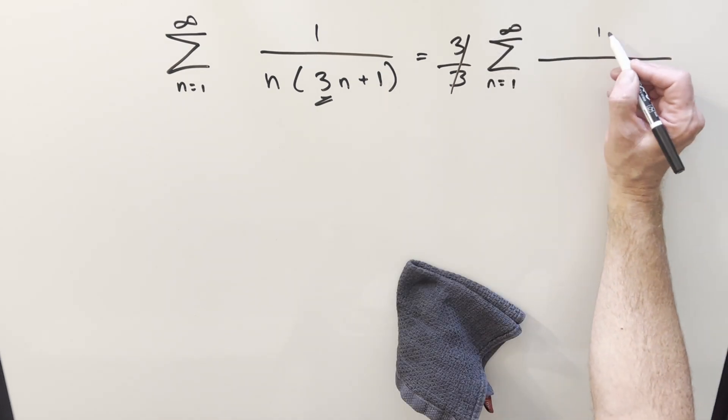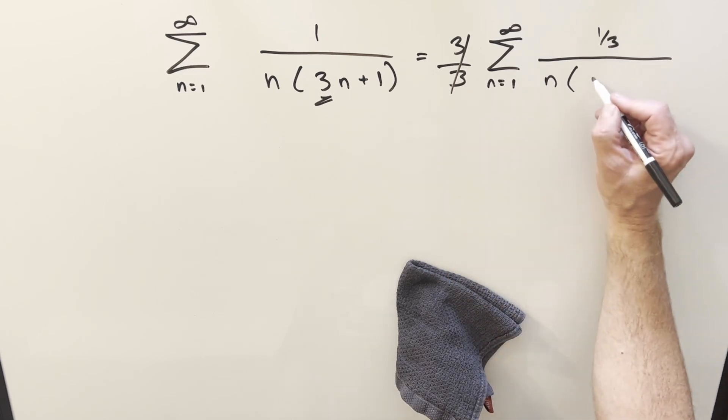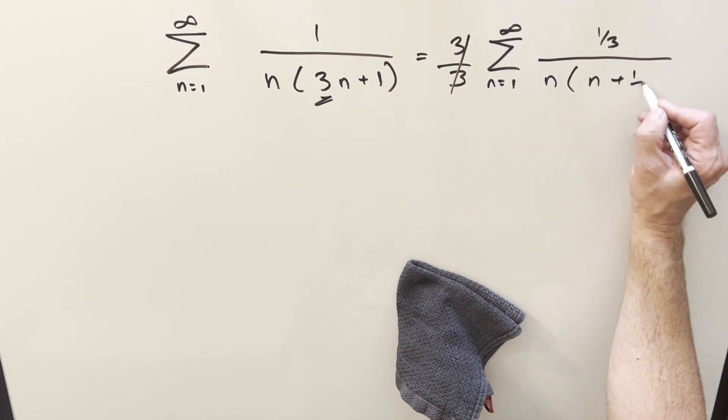Then the numerator is just going to become 1 third, and I'm going to factor, we'll rewrite this, this will become n plus 1 third.